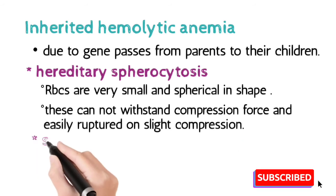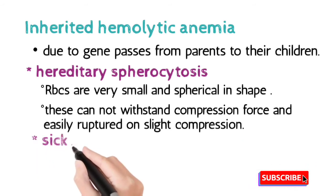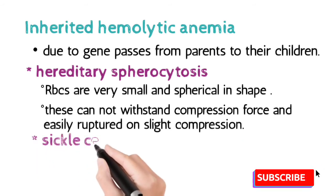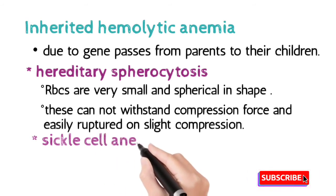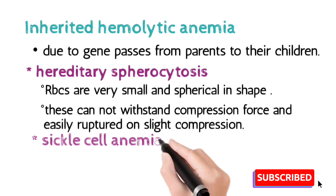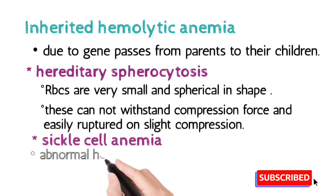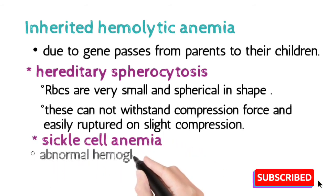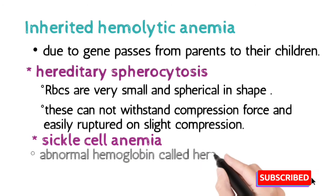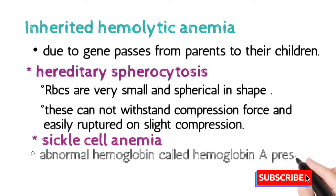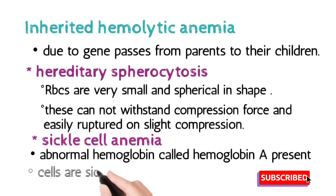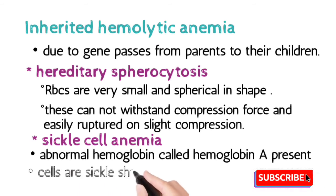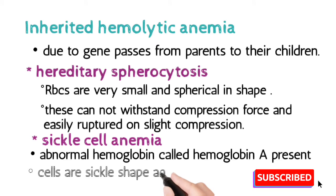The second condition is sickle cell anemia, during which hemoglobin is abnormal — called hemoglobin S (not hemoglobin A). The cells of sickle cell anemia are sickle-shaped and highly fragile, so they are easily breakable when even small pressure is applied on them.